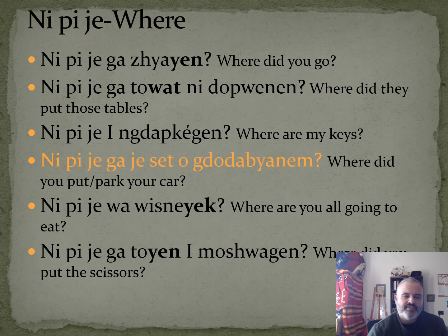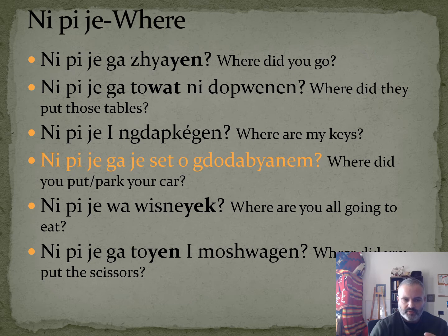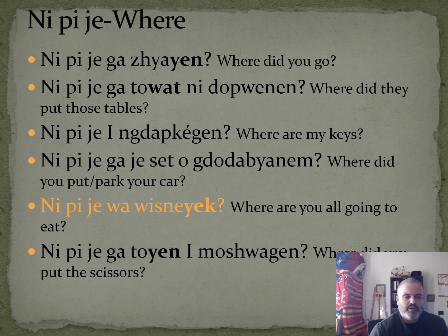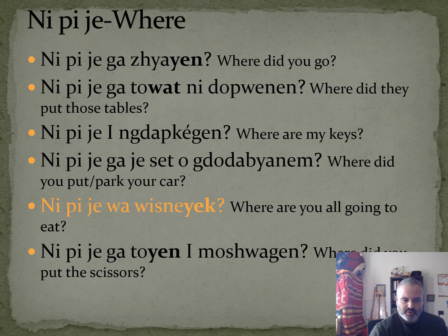Ni pija gazia set o gododabyanam means 'where did you put or park your car?' Because car is animate, you use the verb 'saw,' the verb to put something somewhere that's animate. Ni pija wa wisniak means 'where are you all going to eat?' You can also add a j and say ni pija waja wisniak for 'whereabouts are you going to eat?'